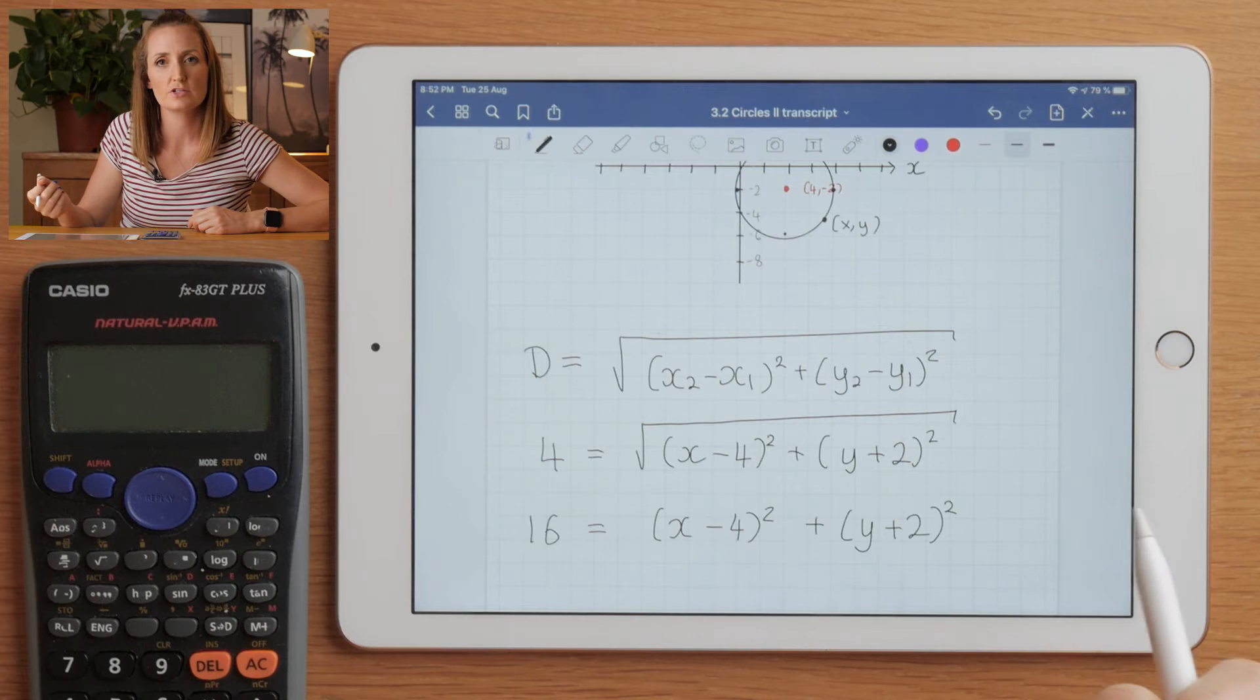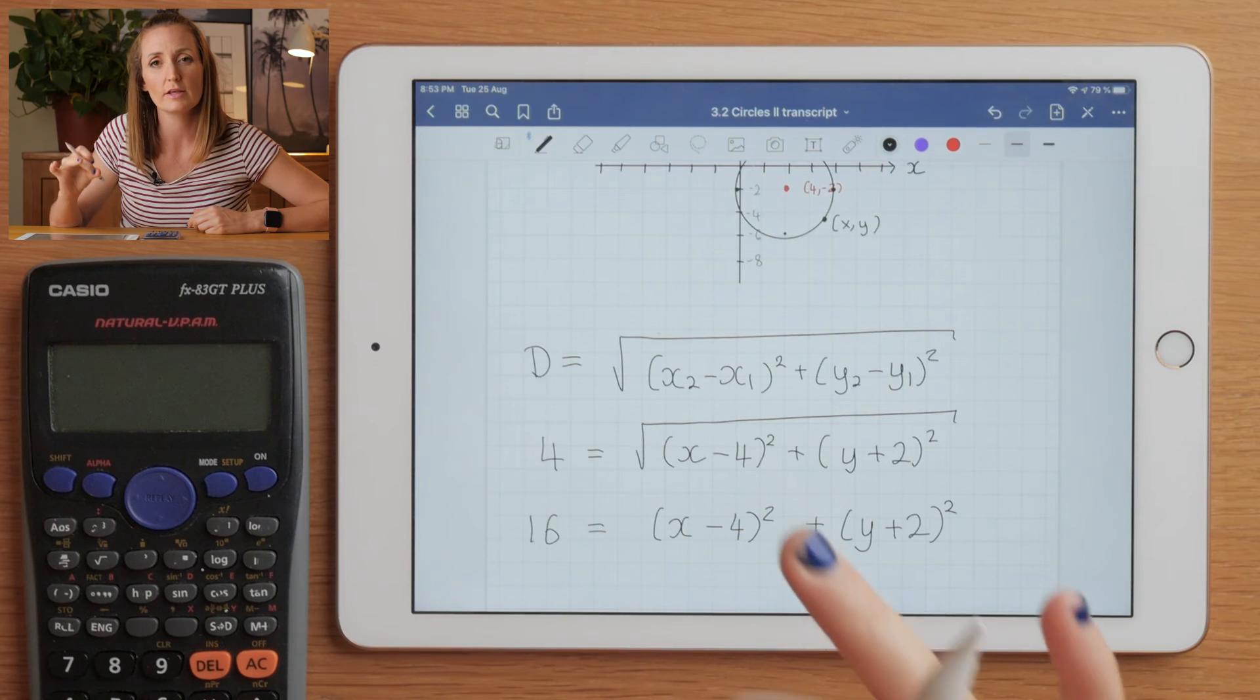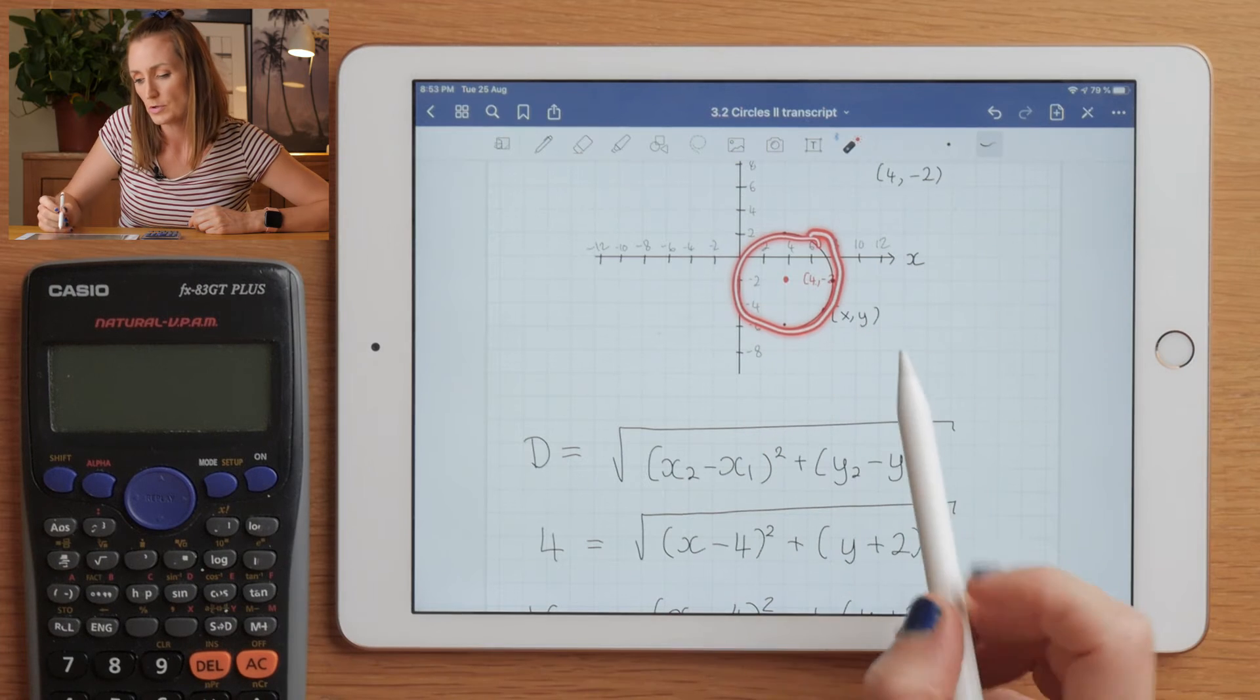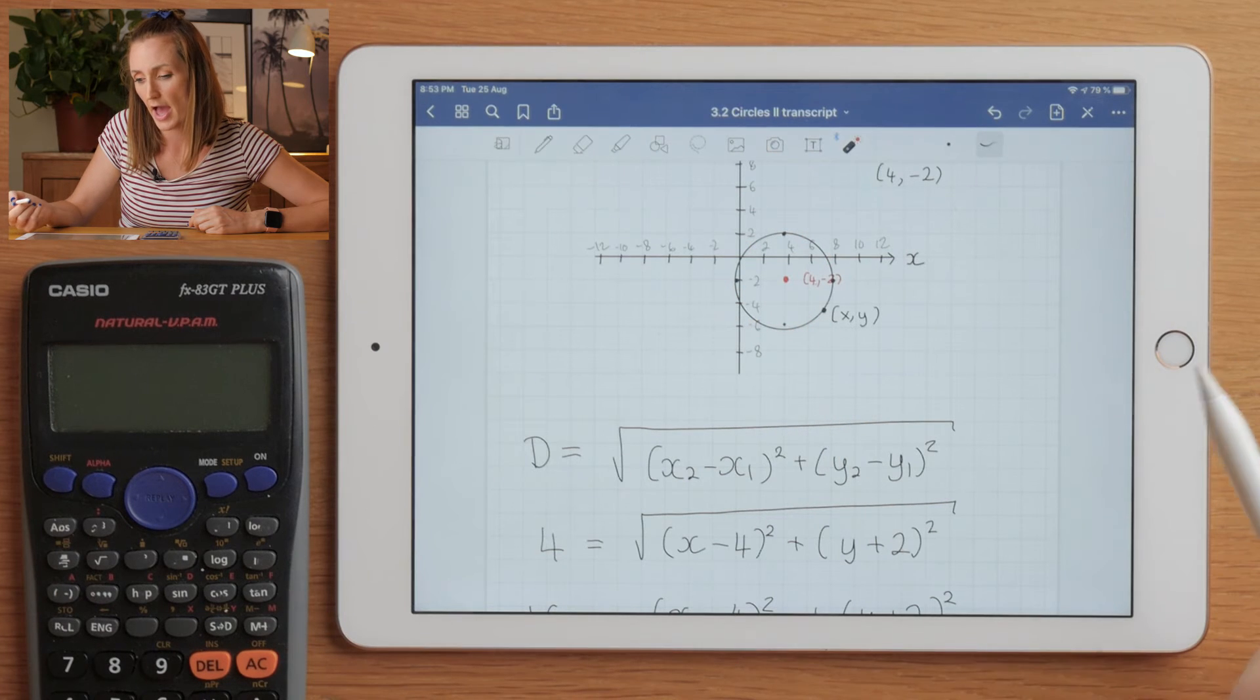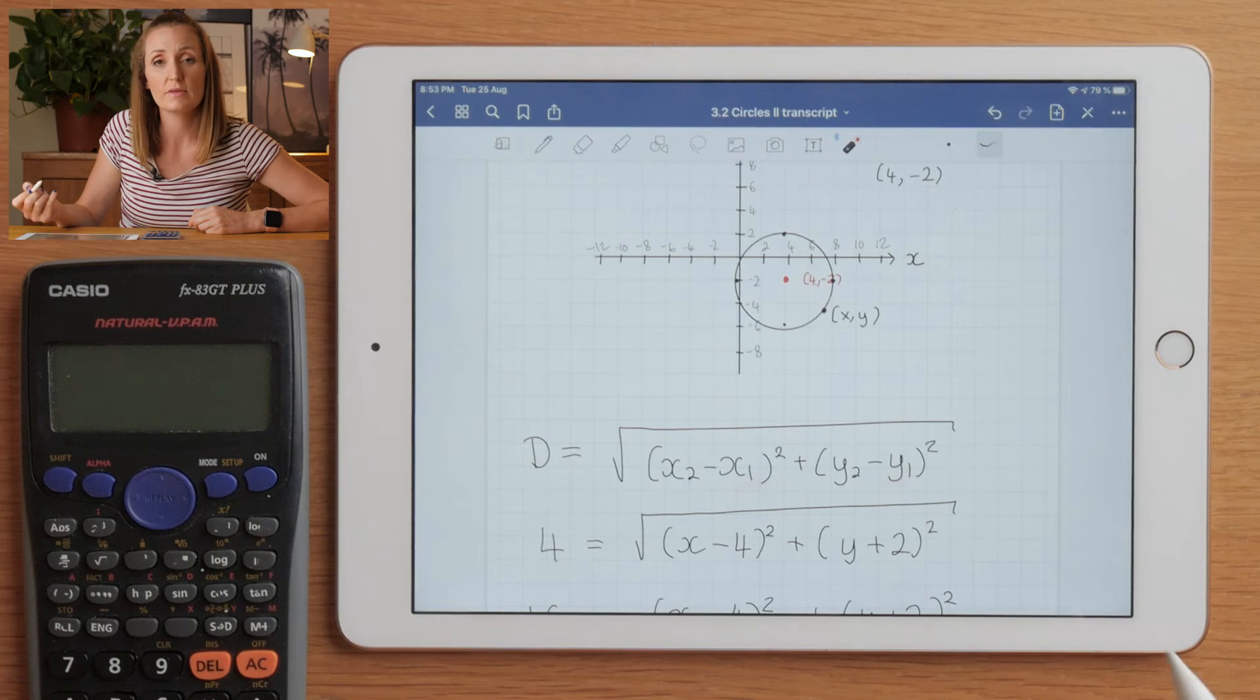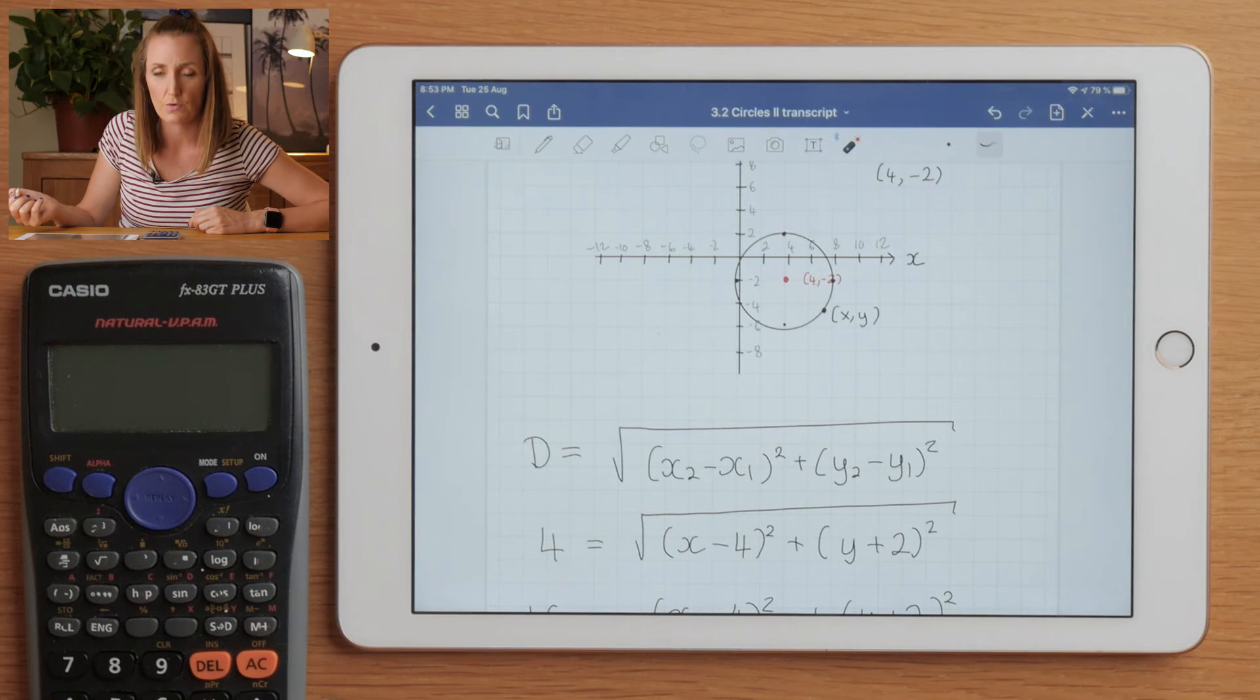So all the equation of the circle is, is the distance formula. We take the distance to be radius, and we always make one point on the outside of the circle—on the circumference of the circle—we just call it (x, y). (x, y) just represents any point here on the circumference, and we take the (x₁, y₁) to be the center of the circle.